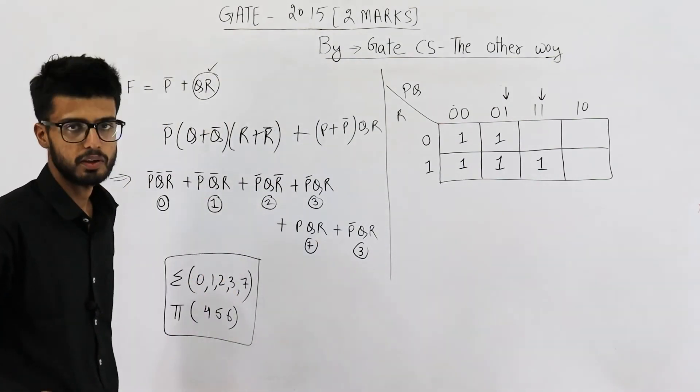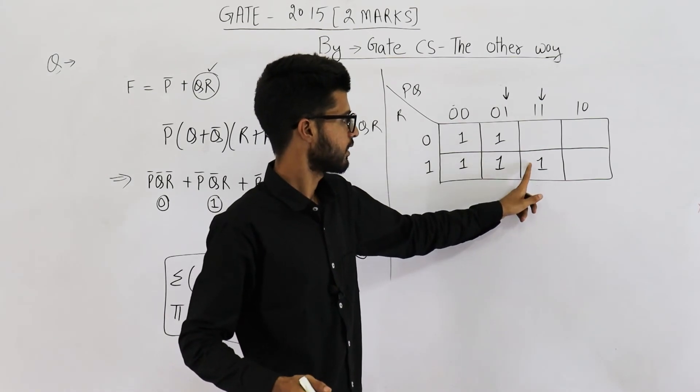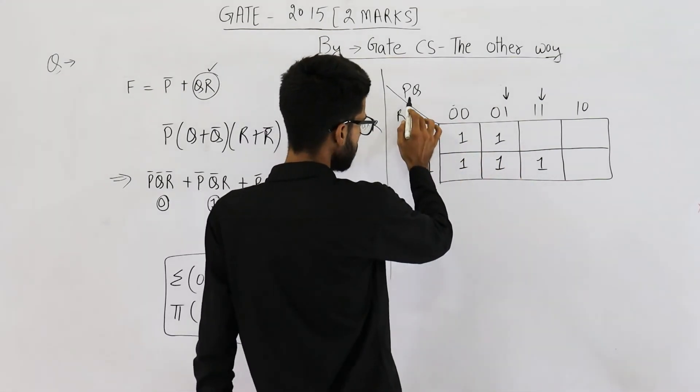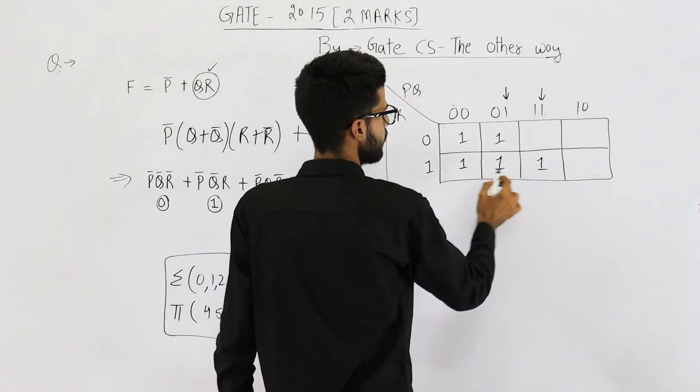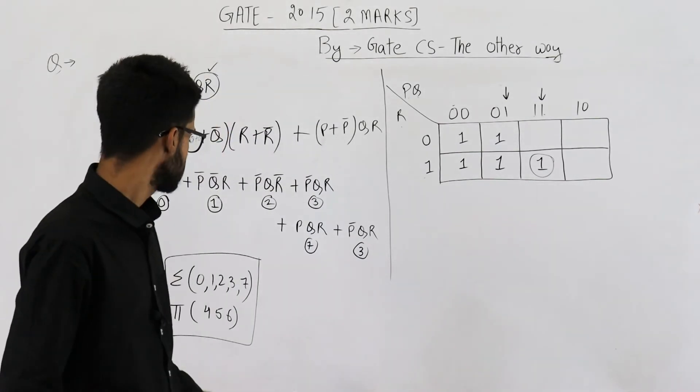0, 1, 2, 3, 7. How do I know that this cell is 7, this cell is 0? You can find it from here. P, Q and R are 1, 1 and 1 for this cell. So this will be 7, triple 1 means 7.